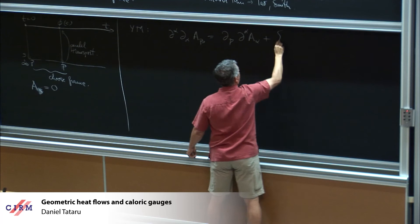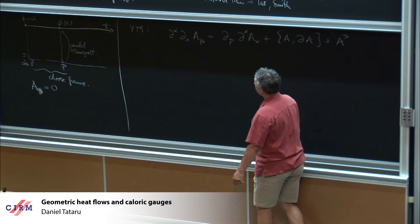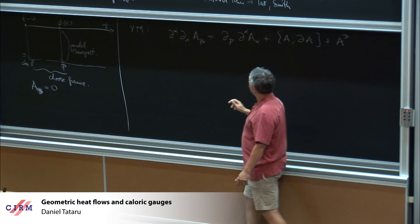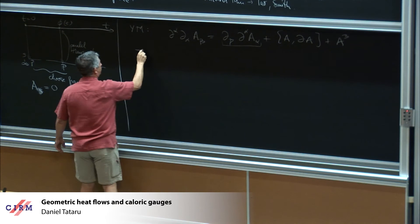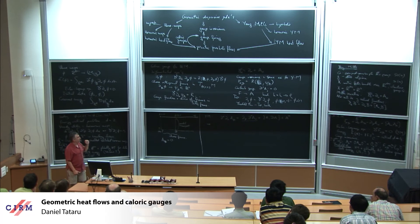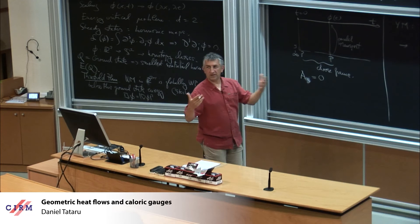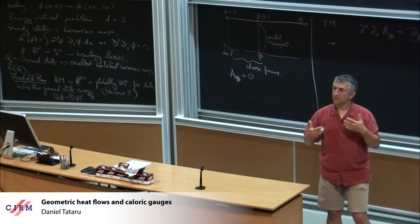When you try to look at a gauge for any of these equations, your first objective should be: you want to choose the gauge so that the nonlinearity becomes perturbative. But this strategy doesn't work for wave maps and doesn't work for Yang-Mills. So you're left with a number of competing goals. Among these competing goals, you can add causality — you want something with finite speed of propagation. You want your equation to have a good structure. And you've heard from Sebastian about null structure — you want your equation to have a good null structure.